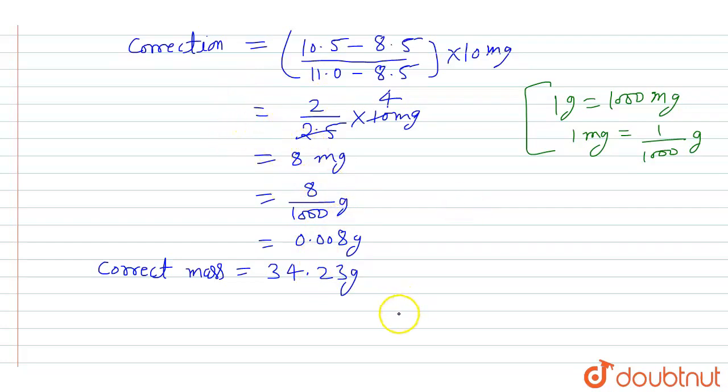The original mass minus the correction. 10 grams is removed so it's minus 0.008. So the correct answer is 34 point 222.